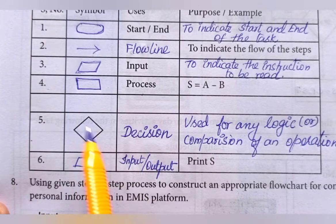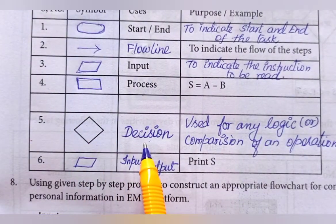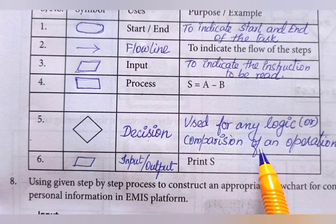Fifth one indicates the decision. The diamond shaped figure. Decision mention. Used for any logic or comparison of an operation.